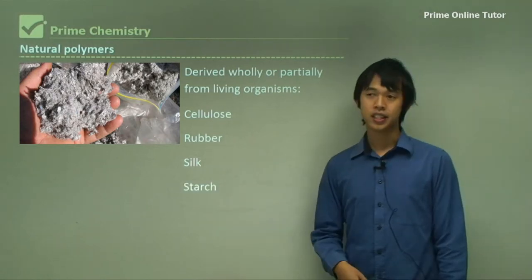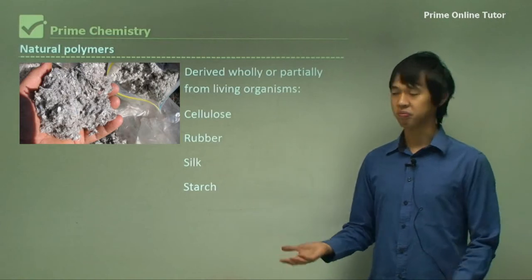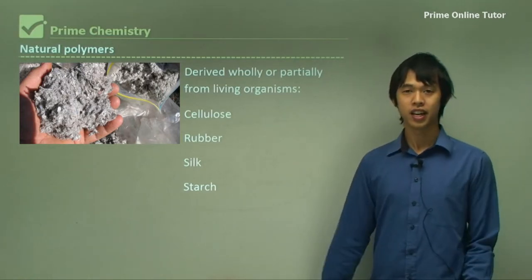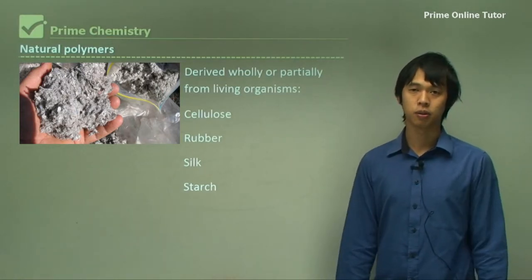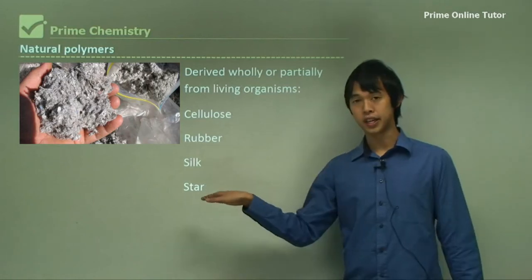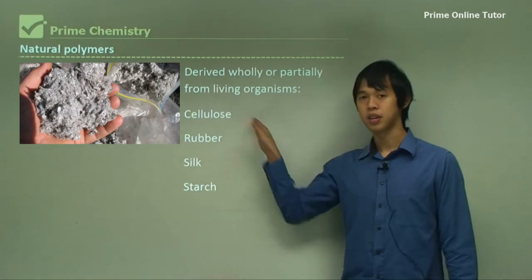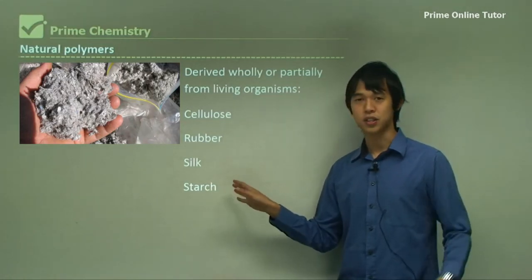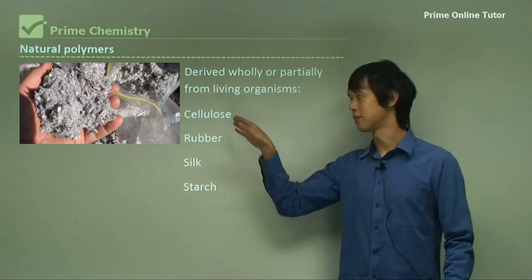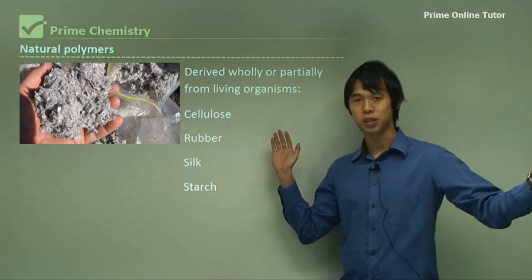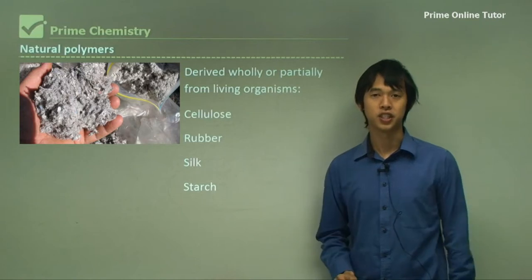Starch from grainy foods is also a natural polymer. Any grain has a lot of starch, and starch is actually a precursor to cellulose — it's sort of the smaller version of cellulose, whereas cellulose is the really huge molecule.